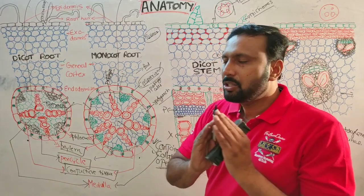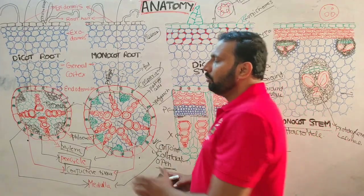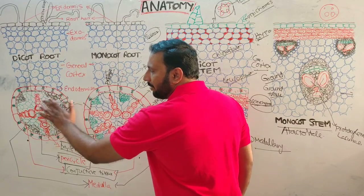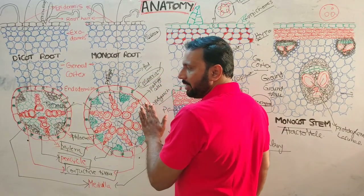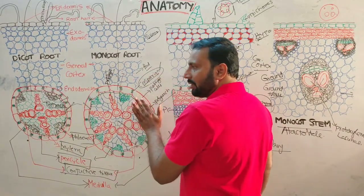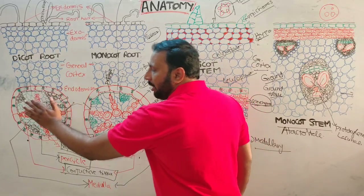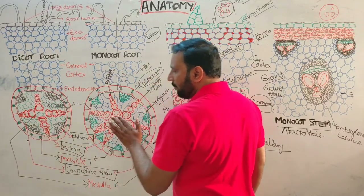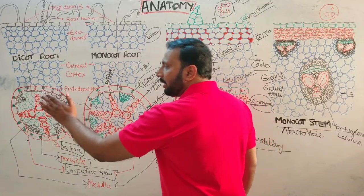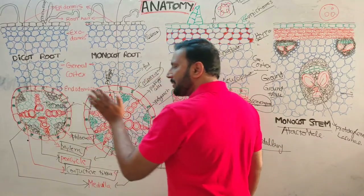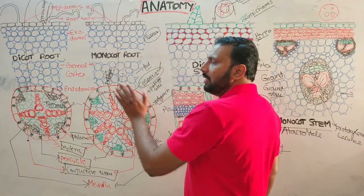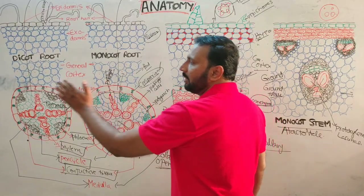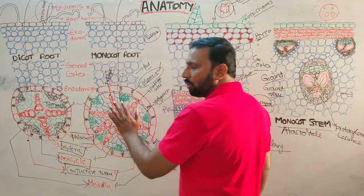To summarize the stele: tetrarch in dicot root, polyarch in monocot root; both exarch; medulla poorly developed or absent in dicot, well developed in monocot; conjunctive tissue present in both; radial vascular bundles in both; both closed vascular bundles.